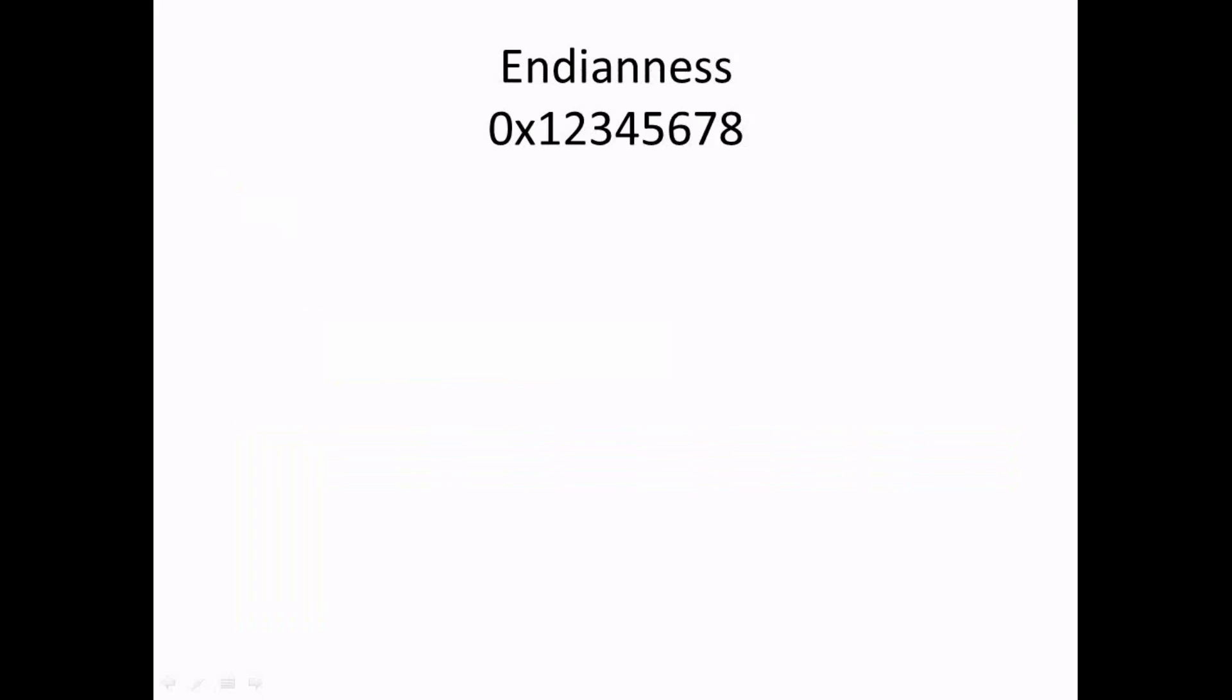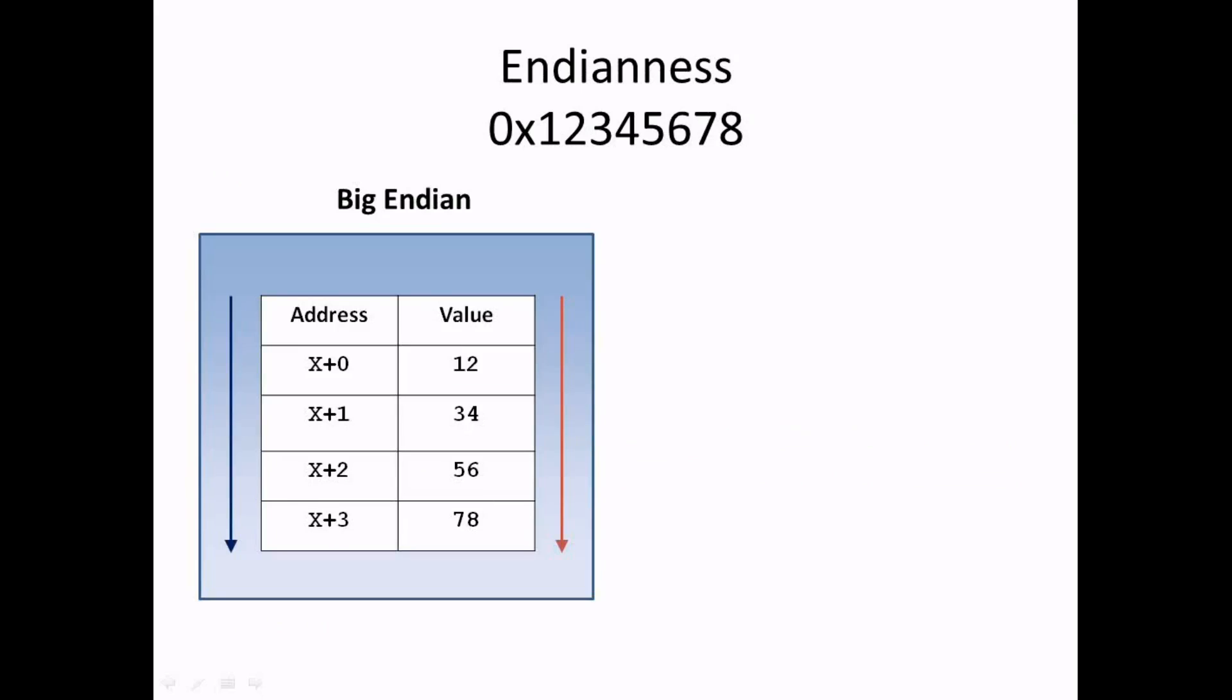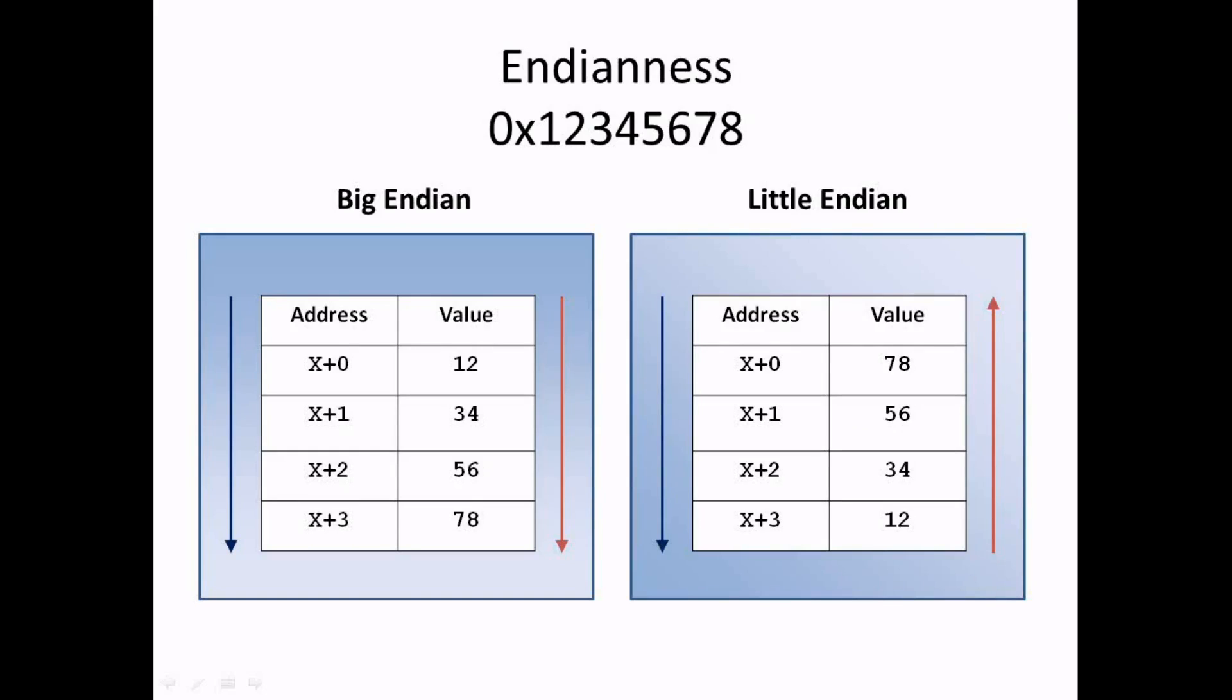In other words, big endian refers to ending on the higher address, or the most significant byte is on the higher address. Similarly, the name little endian refers to ending on the lower address, that is the most significant byte is on the lower address.